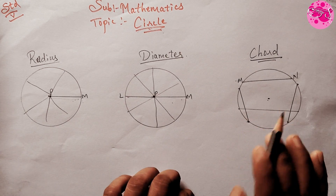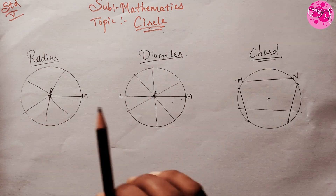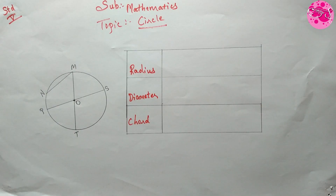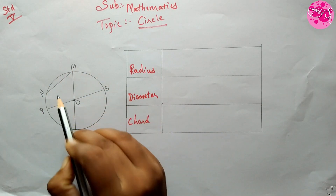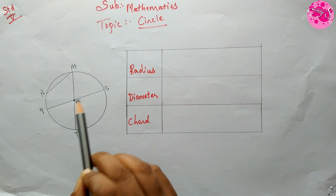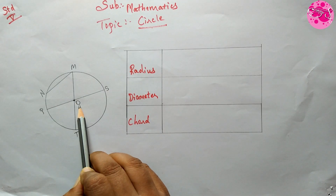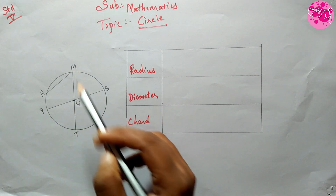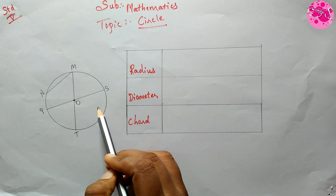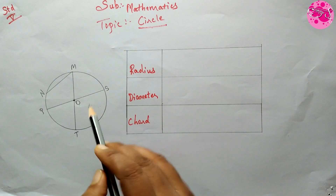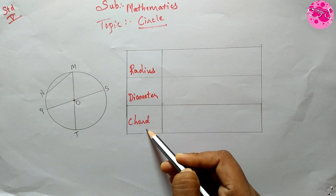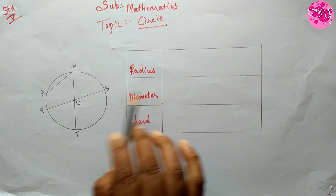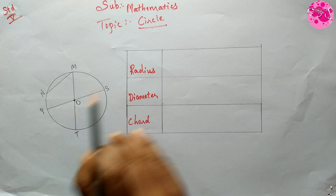Now let's see whether you have understood the concepts of radius, chord, and diameter. Here a diagram is given where the center of the circle is O. There are other points and line segments in the diagram. We have to find the radius, chords, and diameter and write their names in the box.